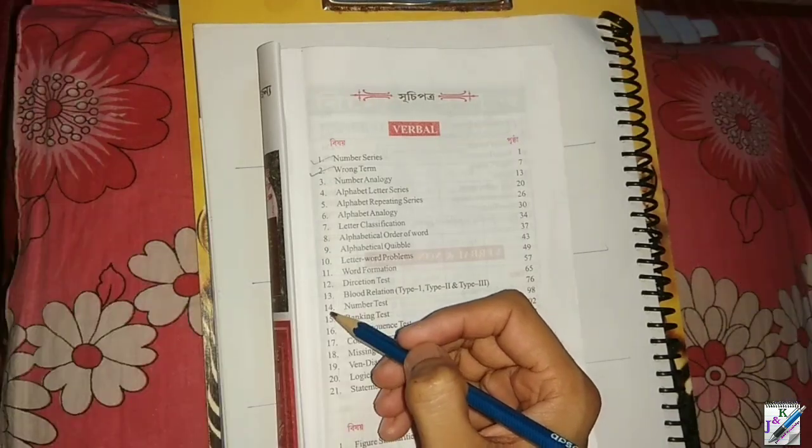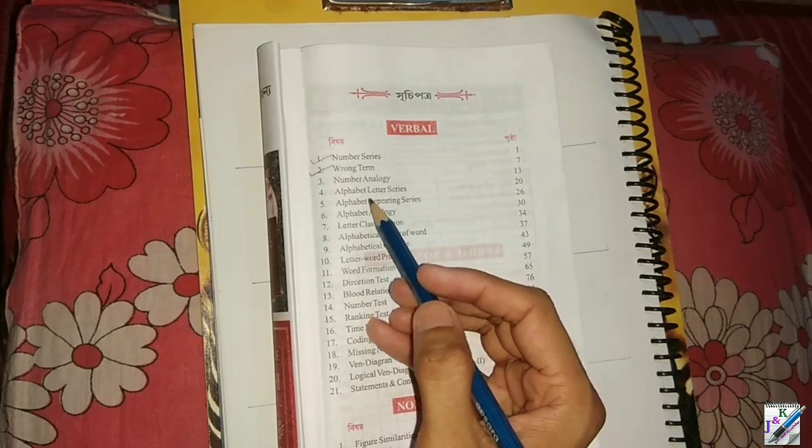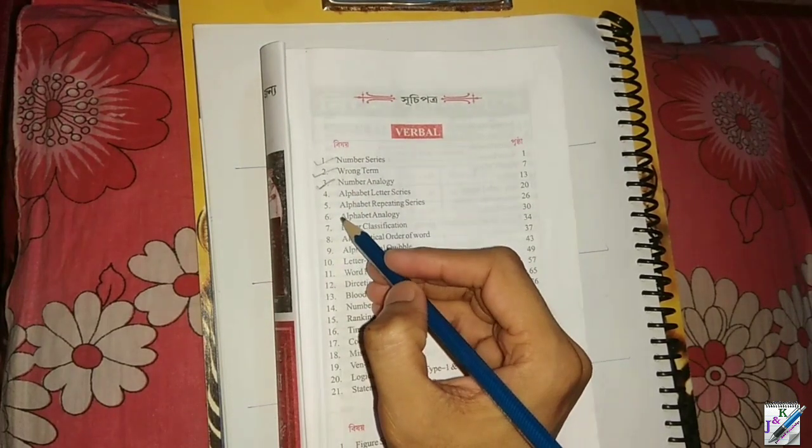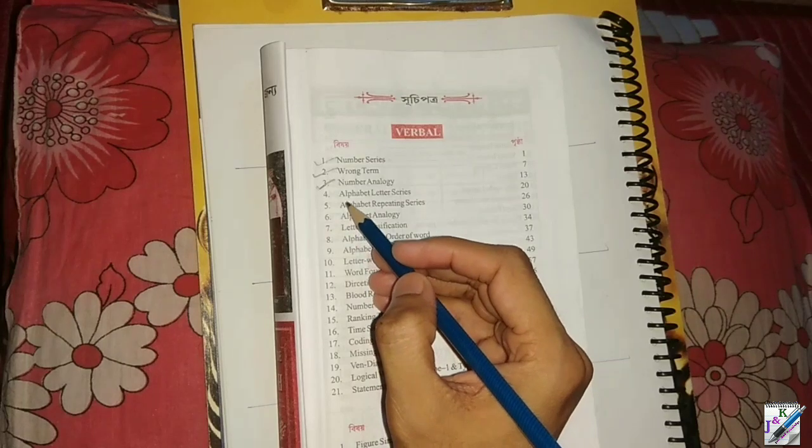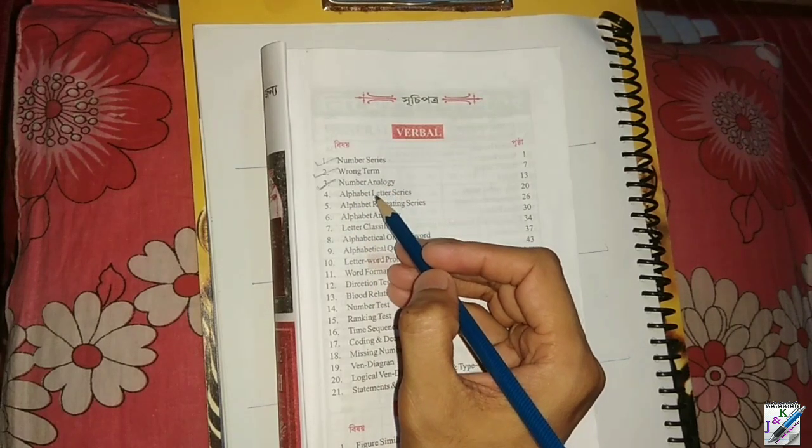If you are interested in the reasoning book, we have already seen the number series or the long-term coronavirus. The number analogy will be completed. The number analogy will be done in the 4th grade. We will see the number analogy in the 4th grade.